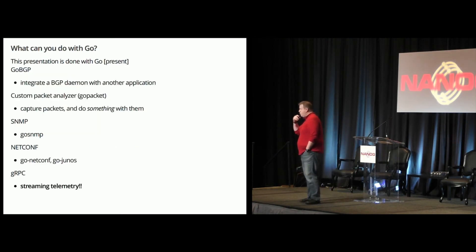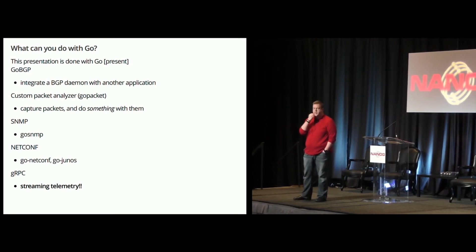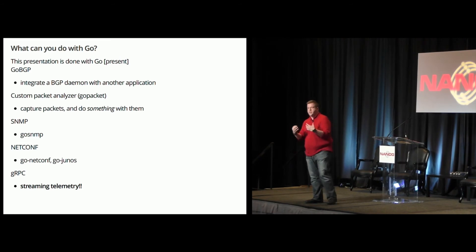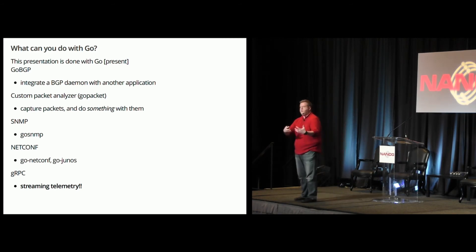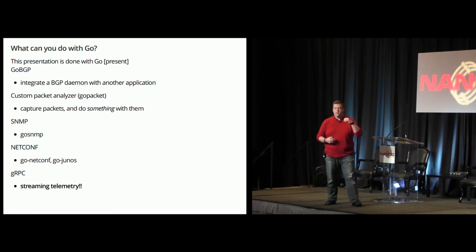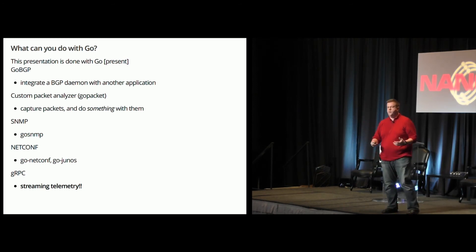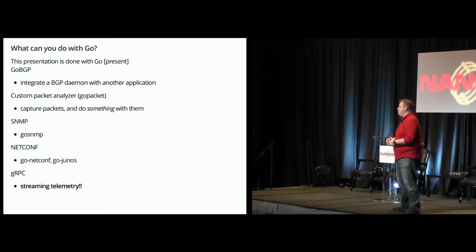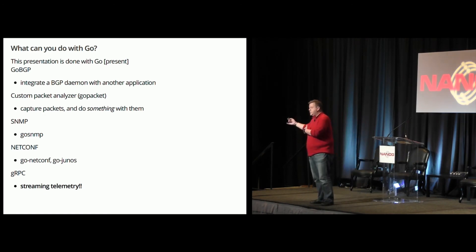So what are some things you can do with Go? Some of the things I've been looking at lately: there's a project called GoBGP, which is a full-fledged standalone BGP daemon. You can actually fire it up and speak BGP to a Cisco or Juniper router. And because it's also written as a library, you can pull it into your own application if you want to write business logic around it, look at routing tables, or whatever. There's also a great module that does PCAP — basically Wireshark — so if you want to capture packets, look at them, and write business logic around them, you can do that.